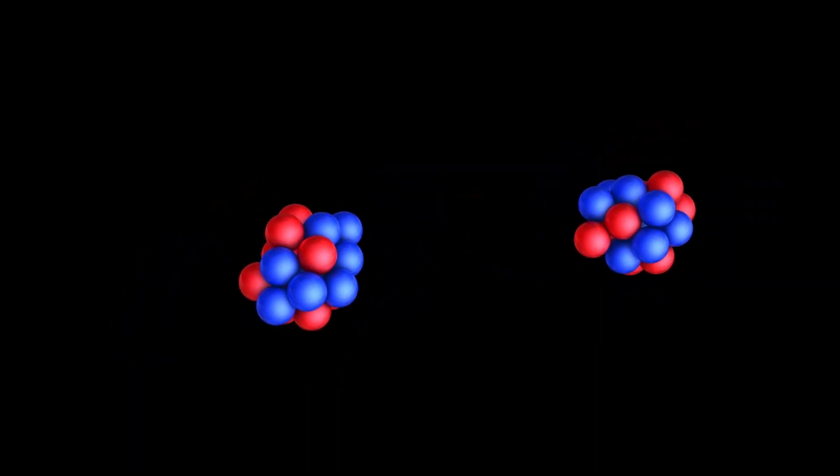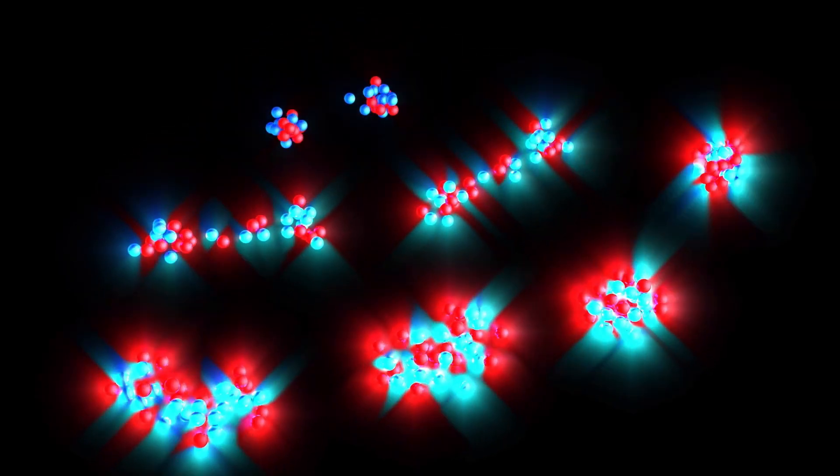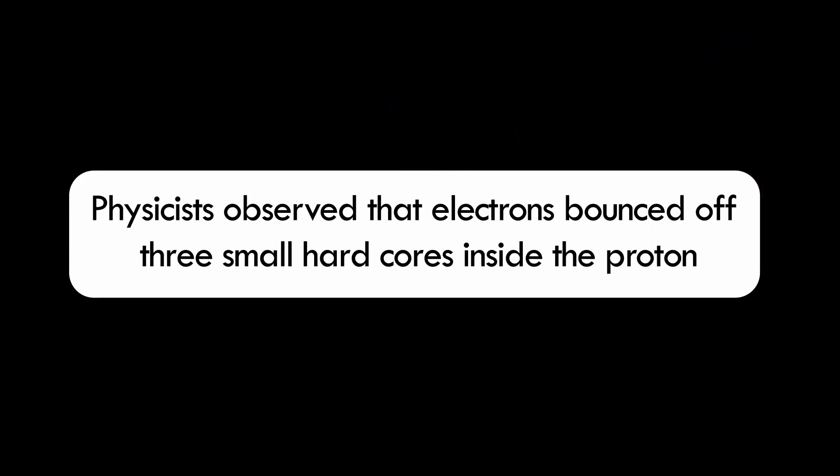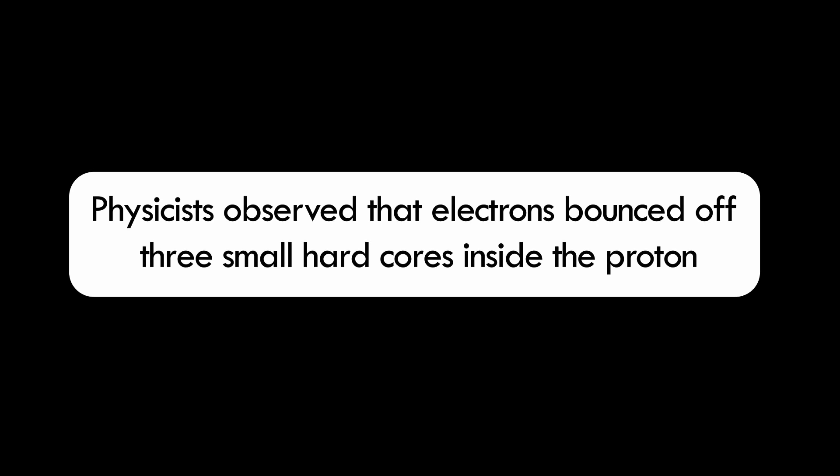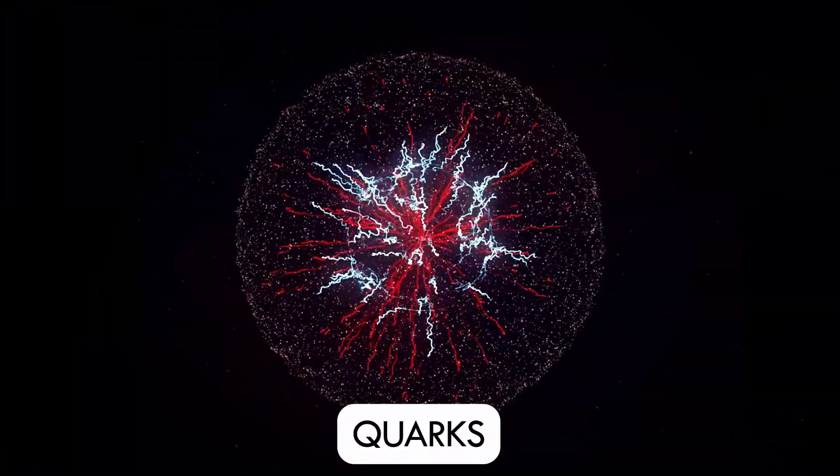When physicists first began colliding electrons with protons, they observed that electrons bounced off three small, hard cores inside the proton. These cores were found to be even smaller particles that make up each proton. These elementary particles are called quarks.